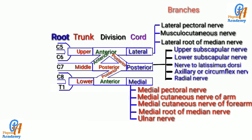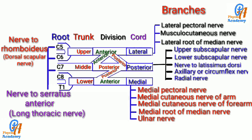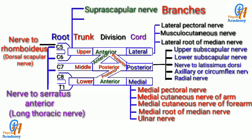Now we'll see the branches of the roots. The nerve to serratus anterior, or long thoracic nerve, originates from the C5, C6, and C7 nerve roots. The nerve to rhomboideus, or dorsal scapular nerve, originates from the C5 nerve root. Regarding the branches of the trunk: the upper trunk gives two branches — first is the suprascapular nerve, and second is the nerve to subclavius.